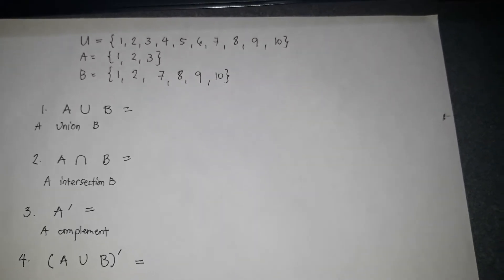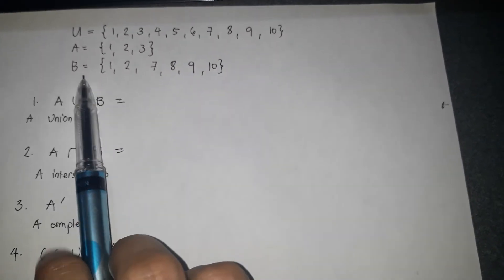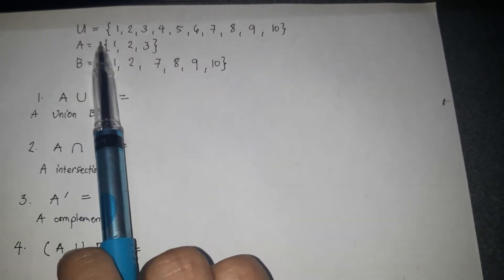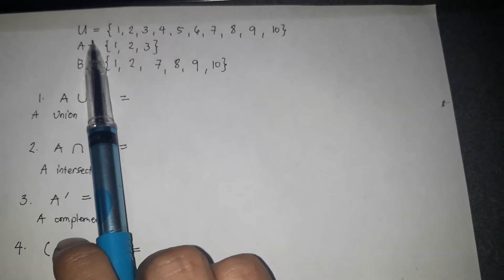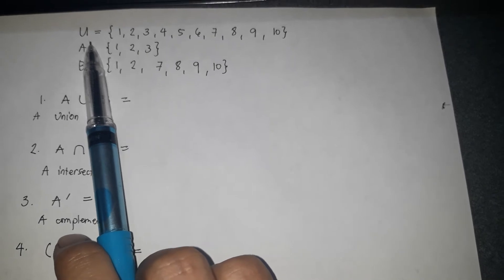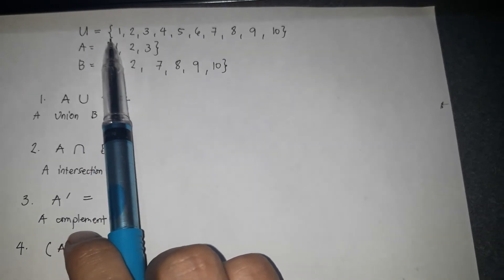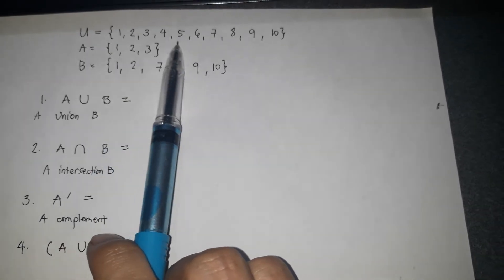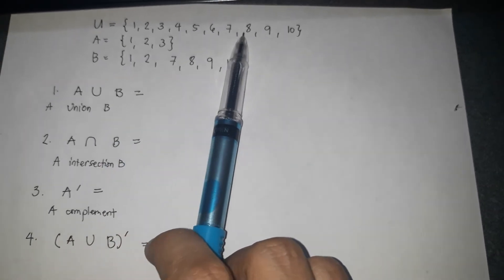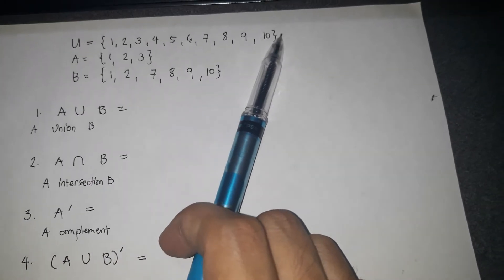Now for the operations on sets. So this is set U, the universal set. The elements are 1, 2, 3, 4, 5, 6, 7, 8, 9, 10.